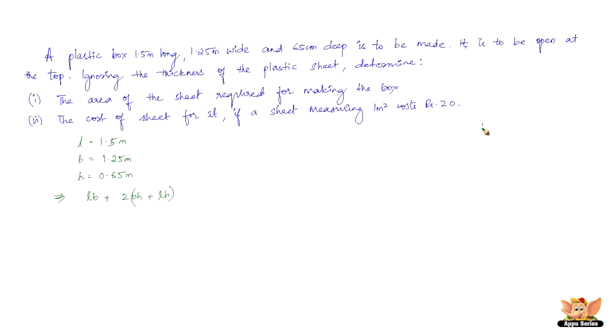Now, the reason for this is, now we have a cuboidal plastic box like this. Now, we do not need the top portion. The top portion includes length and breadth and not the height. Length and breadth. So, one length into breadth is out of the equation. So, that is why this is not 2 into LB. It is just LB.